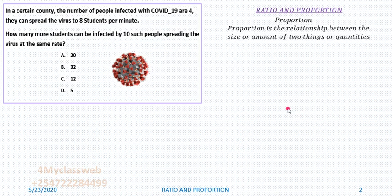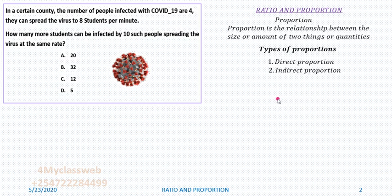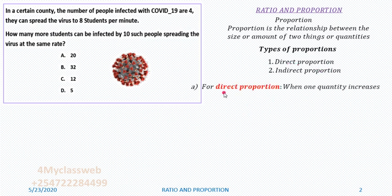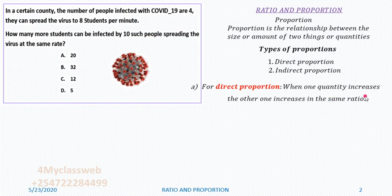Proportions are of two types. The first type is direct proportion. The other one is indirect proportion, also referred to as inverse proportion. For direct proportion, when one quantity increases, the other one increases in the same ratio.